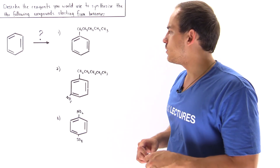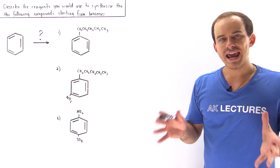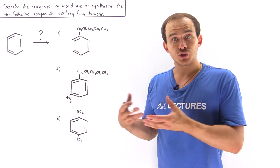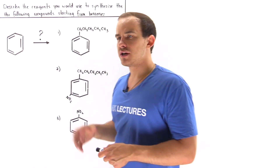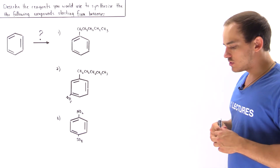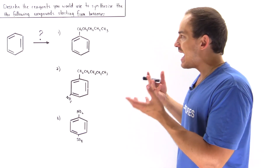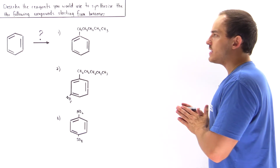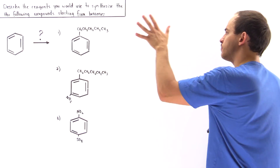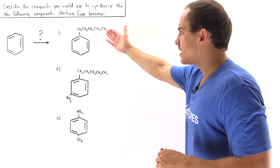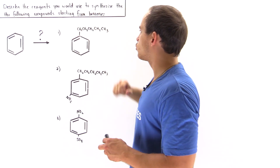Let's take a look at the following example that deals with describing the different types of reagents we have to use to produce three products from our starting material, our benzene molecule. We're not going to focus on the reaction mechanism; instead, we're simply going to state the pathway — the reagents we need to get from benzene to our product. Let's begin with product number one, a mono-substituted benzene containing a five-carbon group.